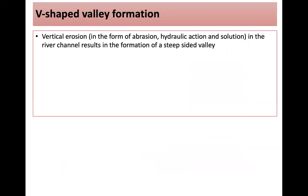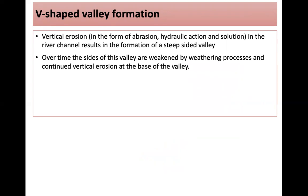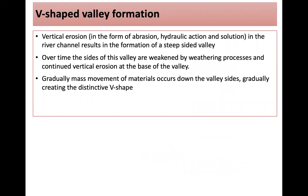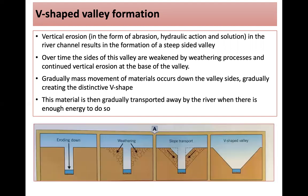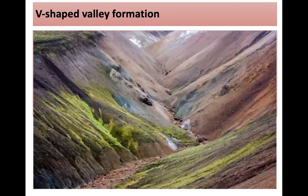V-shaped valleys form through vertical erosion — abrasion, hydraulic action and solution in the river channel — resulting in a steep-sided valley. Over time, the sides of the valley are weakened by weathering processes and continued vertical erosion at the base. Gradually, mass movement of materials occurs down the valley side, creating the distinctive V-shape. This material is then transported away by the river when there is enough energy to do so.